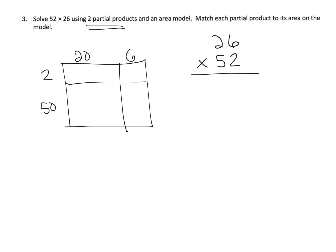We'll fill in the partial products in order. Two ones times six ones is 12 ones, and two ones times two tens equals four tens, which is 40. Adding those together we get 52, which goes right here. It's a coincidence that this is 52 — really what we did was 2 times 26.